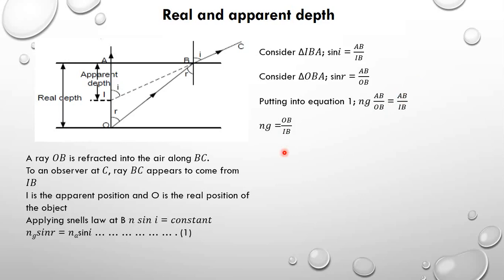Now we make the assumption that angles I and R are small angles, since point A is assumed to be very close to B. If A is close to B, then the distance OA is approximately equal to OB, and the distance IA is approximately equal to IB. So replacing OB with OA and IB with IA, we get N_G equals OA over IA, which is real depth over apparent depth.